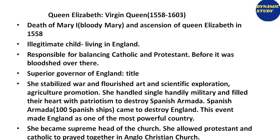Next, let's talk about Queen Elizabeth, whom we call the Virgin Queen. The death of Mary I and the ascension of Queen Elizabeth took place in 1558. Mary I had a lot of cruelty in her time — there was much bloodshed, and she was so powerful and rigid that she wanted Catholicism everywhere and killed Protestants. That is why people named her 'Bloody Mary.' But then Queen Elizabeth came, and the whole chain of events led to her rise.